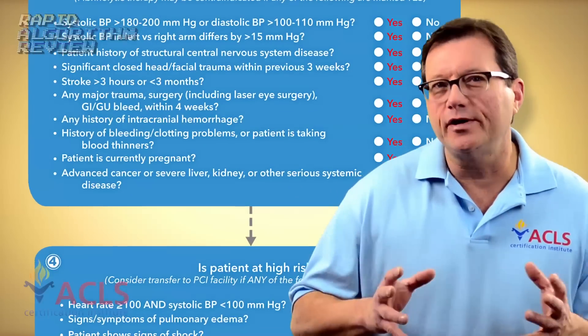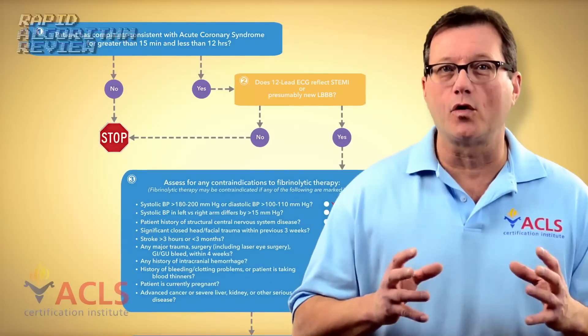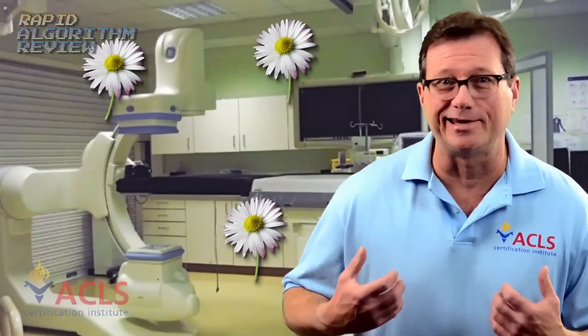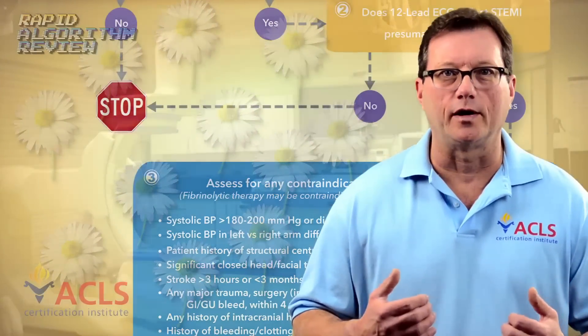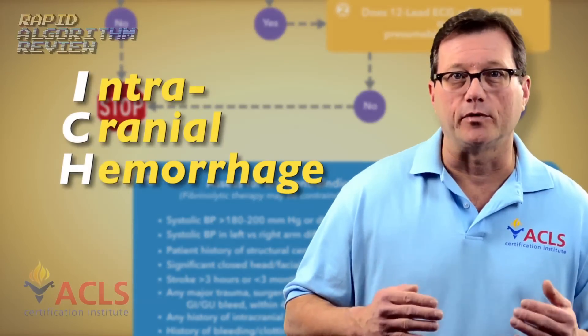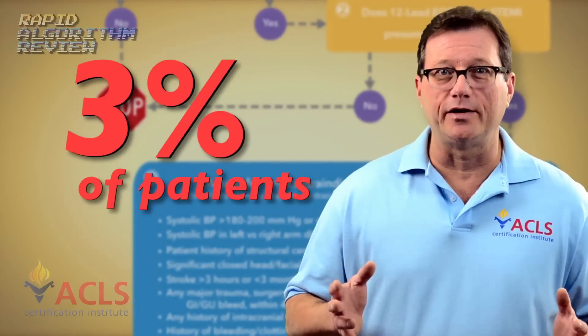All things being equal, most practitioners during an acute coronary event would probably prefer to take their patient to the cath lab rather than giving thrombolytics. I remember 20 years ago, before we had cath labs popping up like daisies, we were giving TPA in the ER. One of the big risks in using a clot-busting drug is ICH, or intracranial hemorrhage, and this occurs in about three out of every 100 patients.